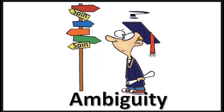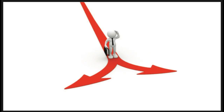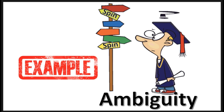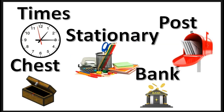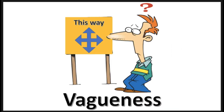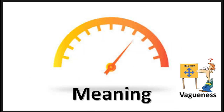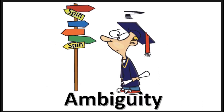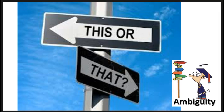An ambiguous expression is an expression that can have two completely different meanings. Examples of some ambiguous words would be times, post, stationary, chest, bank, etc. So, a vague expression has one meaning but comes in different degrees, and an ambiguous expression is one that can have two separate meanings.